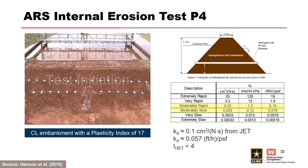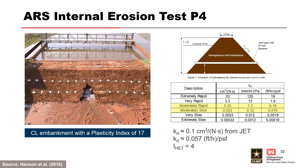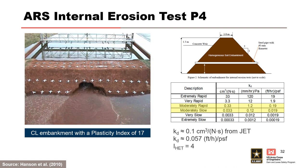The next video shows field testing on a moderately erosion resistant material with a moderately slow rate of erosion. The erodibility coefficient is three orders of magnitude less than the test on the previous slide. The flow path on the downstream side expanded, but did so very slowly over a period of 72 hours prior to the determination of the test.